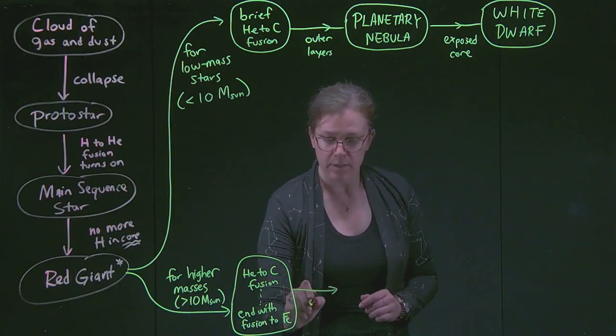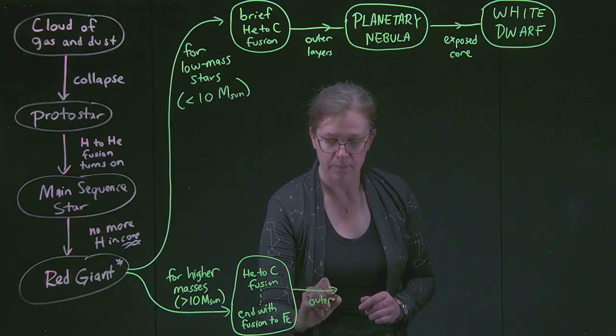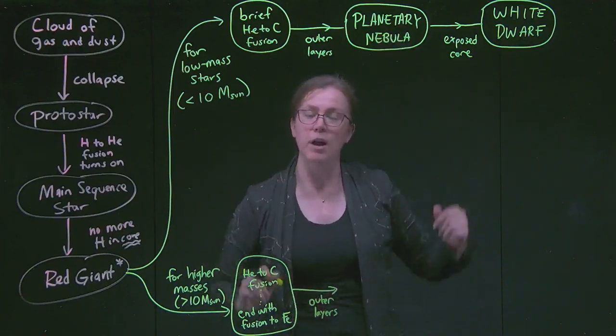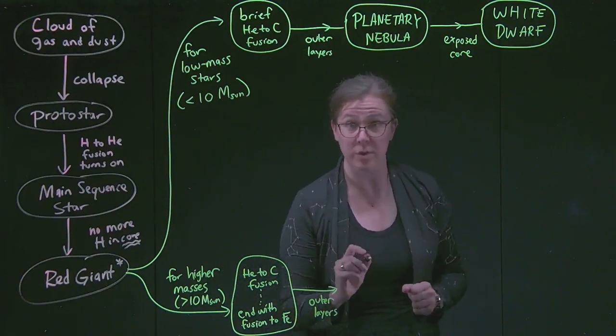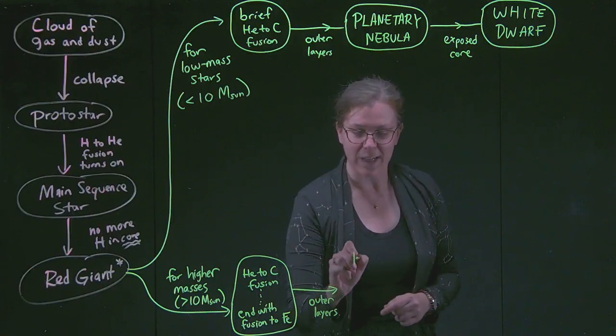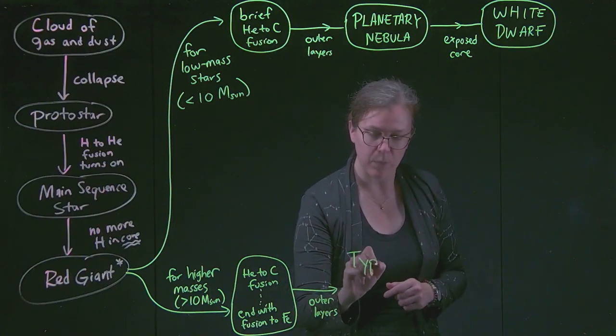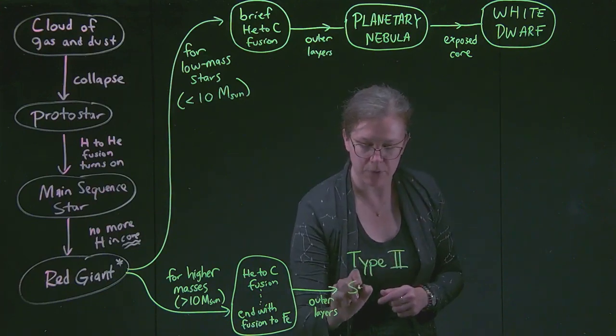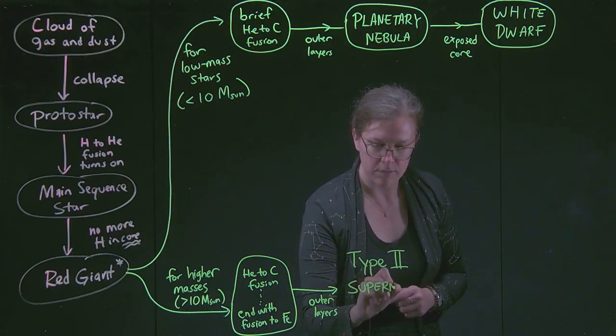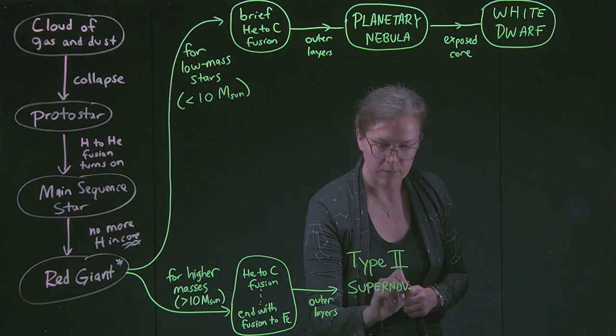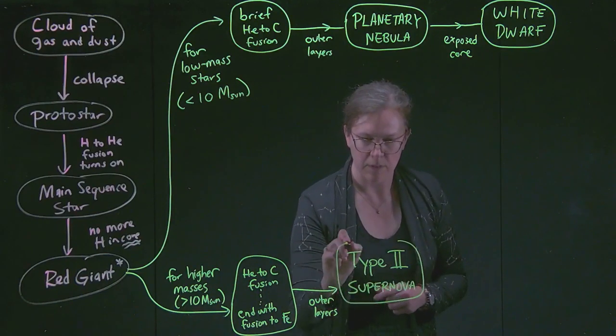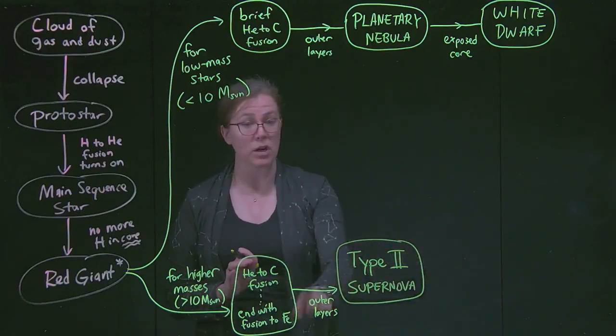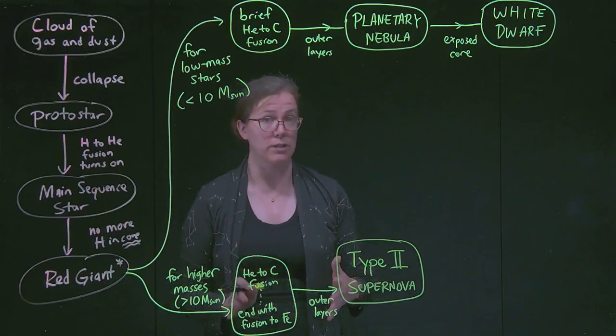So the outer layers, rather than kind of gently puffing off as a planetary nebula, they go supernova, kaboom. And we'll talk about the type 1a that we learned about in a second later, but this is a type 2 supernova. So a type 2 supernova is a high mass star that has exploded its outer layers.